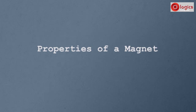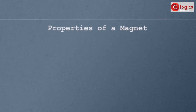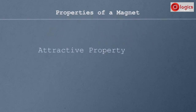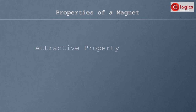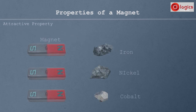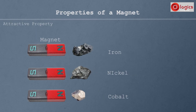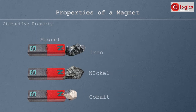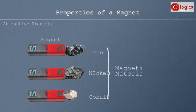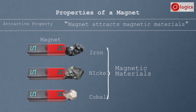Let us understand the properties of a magnet. Attractive property: as you know, a magnet attracts iron, nickel, and cobalt materials. These materials are known as magnetic materials. This occurs due to the attractive property of the magnet.